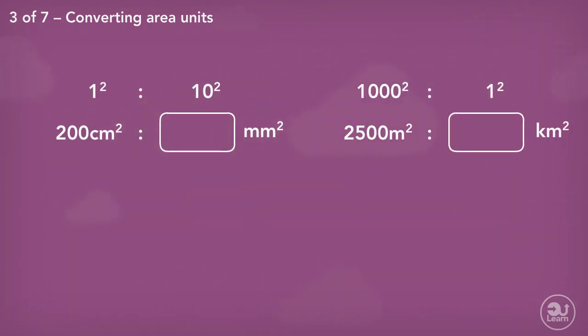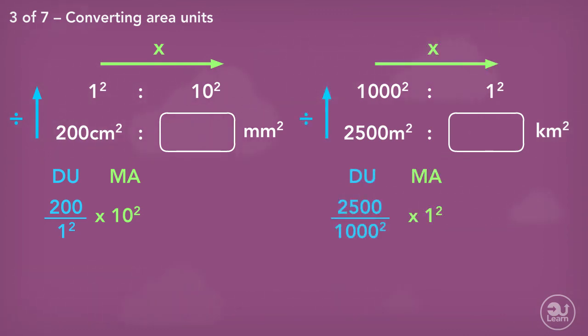Using our previous values and these new ratios, divide up, multiply across, divide up and multiply across again, we get the same answers.